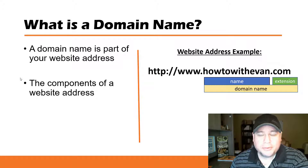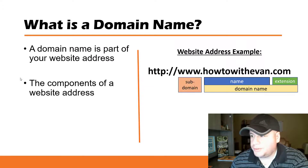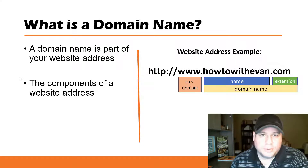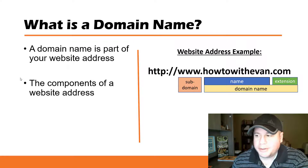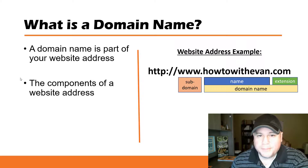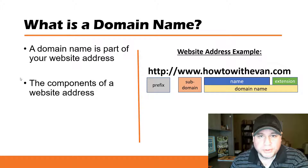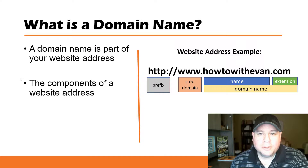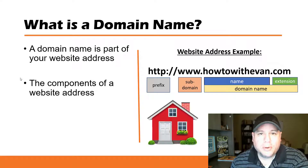A domain name could also include a prefix called the subdomain — for example, www. This can be replaced with other words. Then there's the protocol, which is HTTP, or HTTPS if it's a secured website. Ultimately, all of these components make up your home and hub on the internet — your website address.